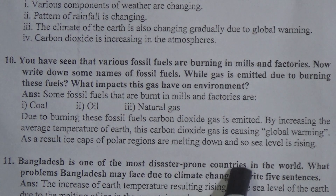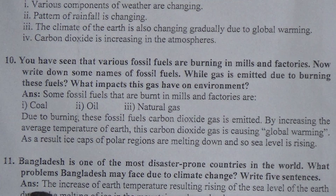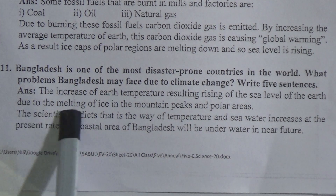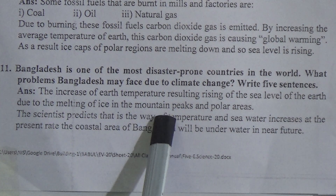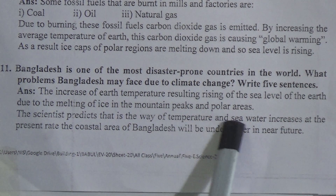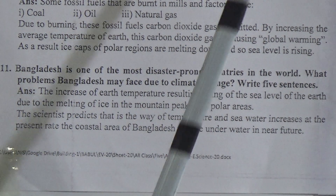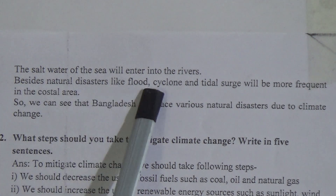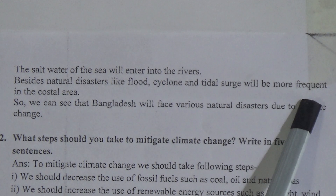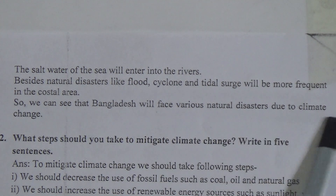Bangladesh is one of the most disaster-prone countries in the world. What problems may Bangladesh face due to climate change? Write five sentences. The answer is: the increase of Earth's temperature is resulting in rising sea levels due to the melting of ice in mountain peaks and polar areas. Scientists predict that if temperature and sea water continue increasing at the present rate, the coastal areas of Bangladesh will be under water in the near future. Salt water of the sea will enter the rivers, and natural disasters like floods, cyclones and tidal surges will be more frequent in coastal areas.